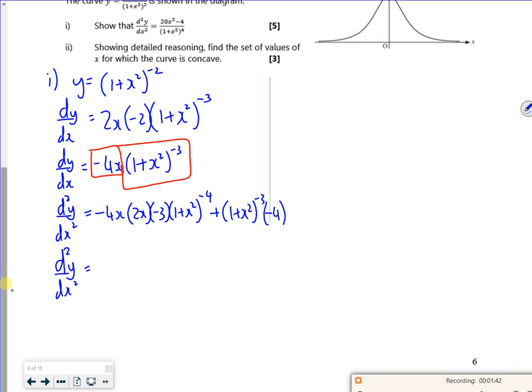So then that should give me, if I tidy up a little bit, I've got minus 4x times 2x times 3, so that's 24x² to the power of minus 4, and then minus 4 lots of 1 plus x² all to the power of minus 3.